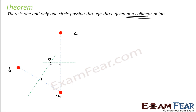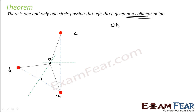If you see, this point O will actually lie on the perpendicular bisector of AB, and O will also lie on the perpendicular bisector of BC. Now let's join points OA, OB, and OC. We will observe that OA will be equal to OB. Let me put some names here — let this point be M and this point N.